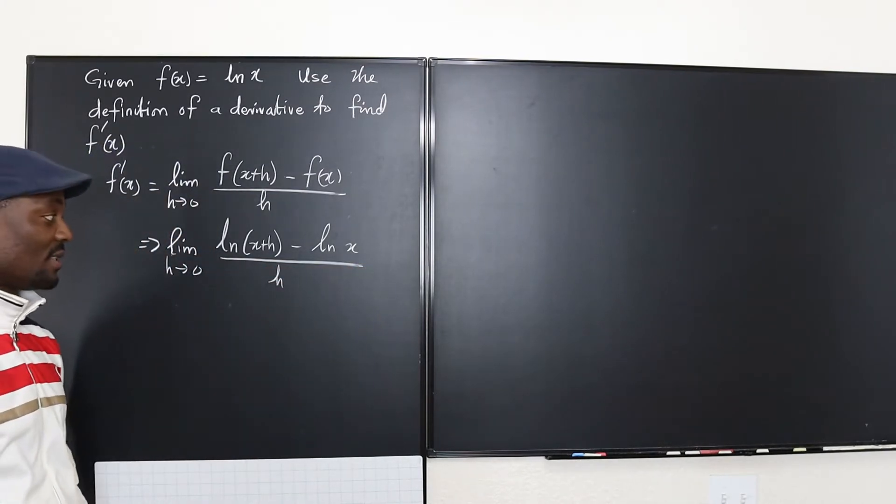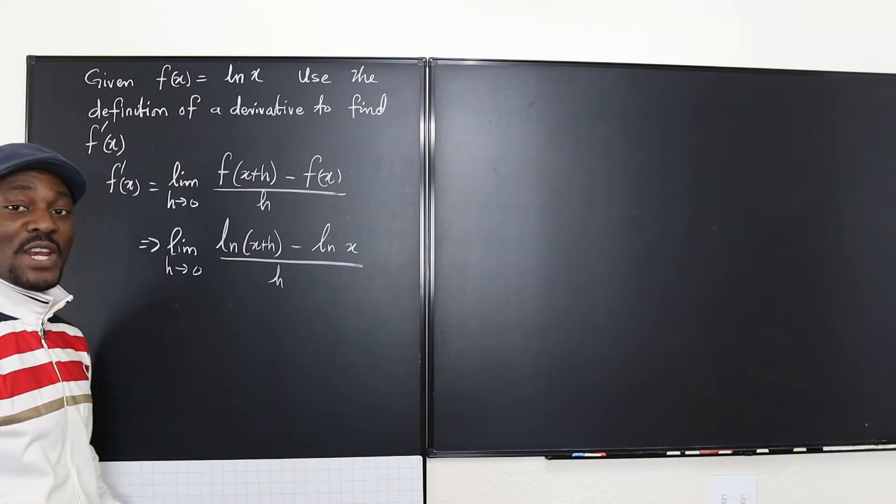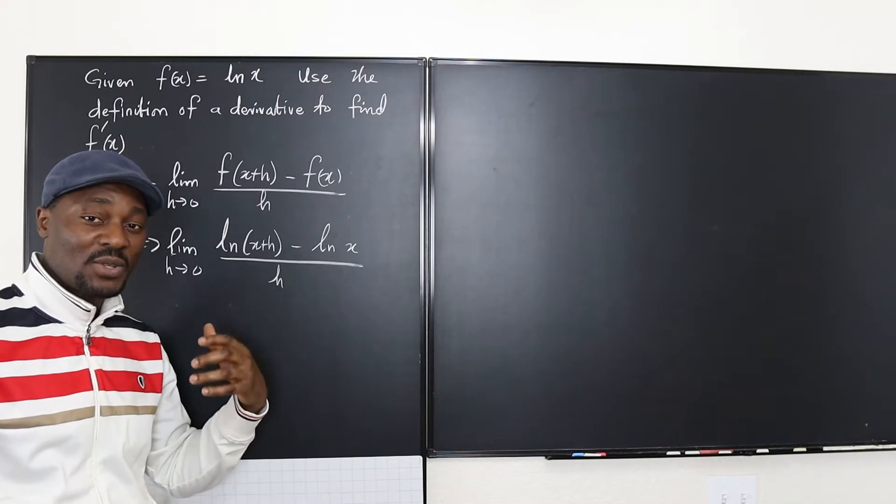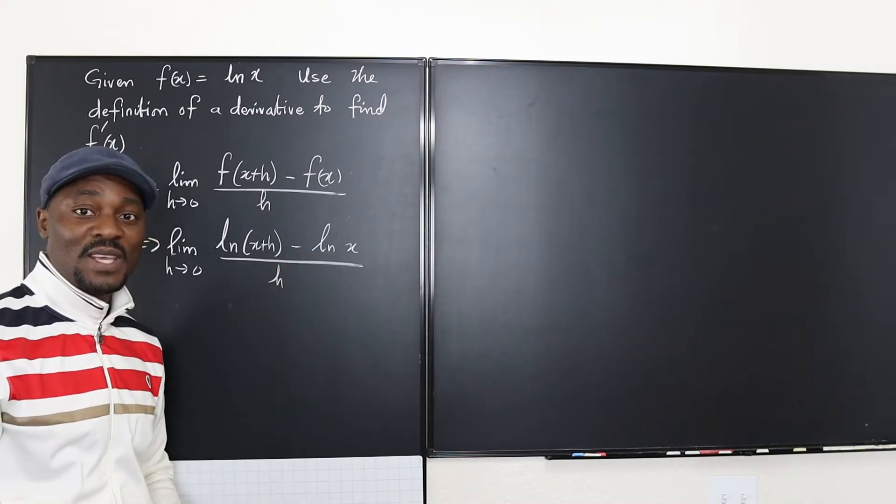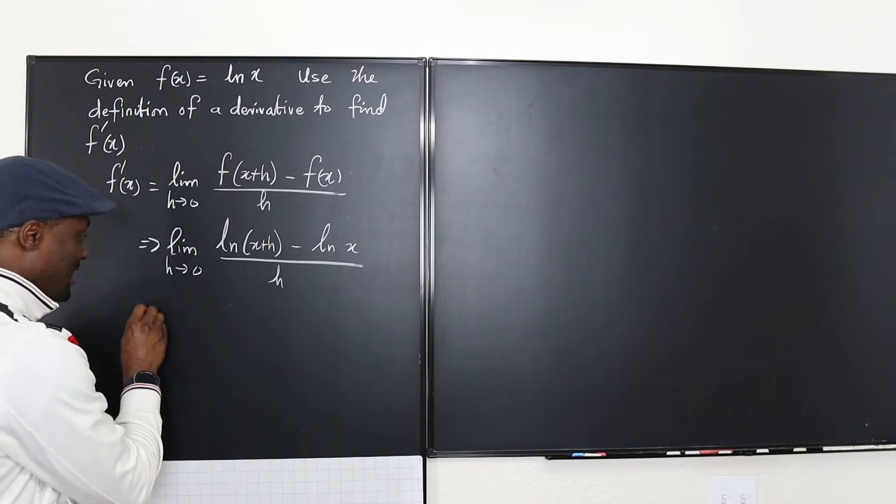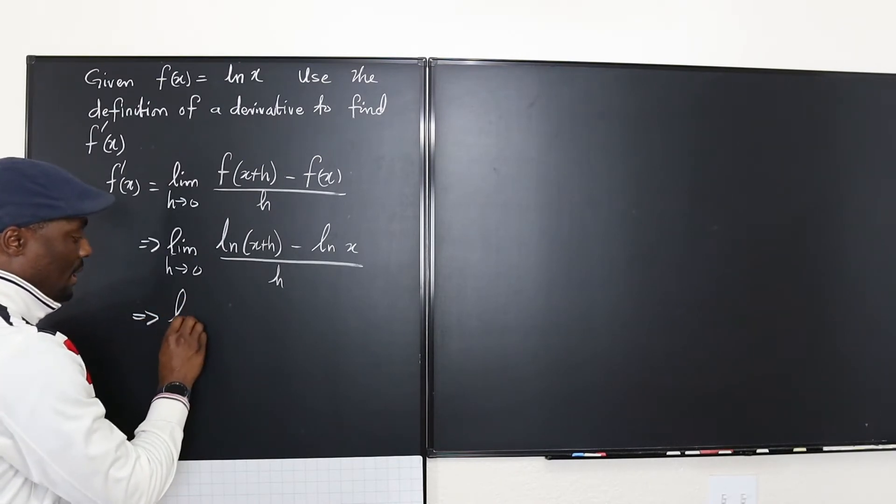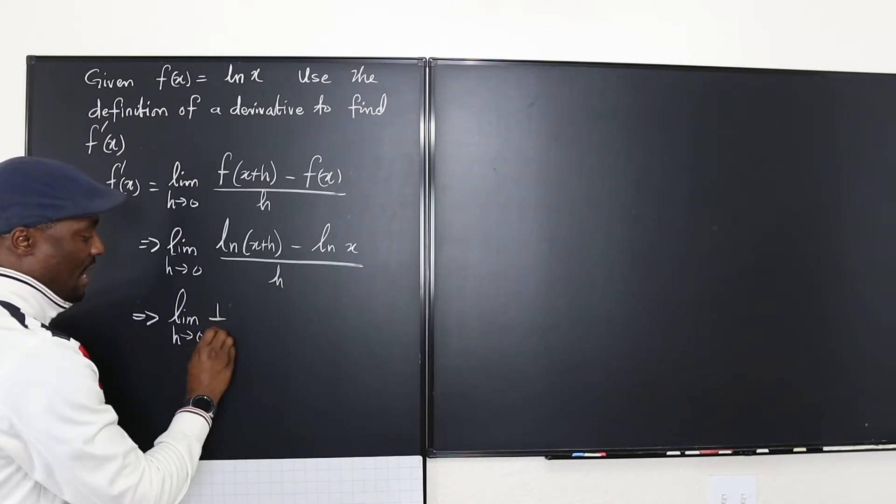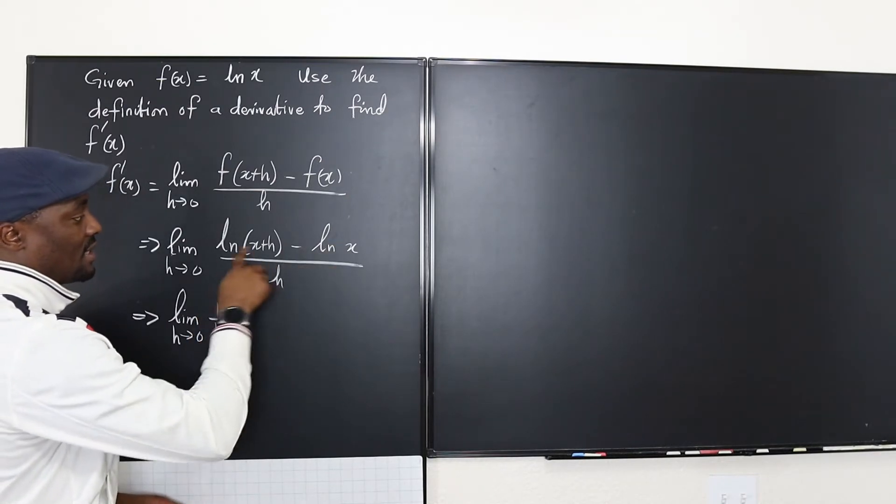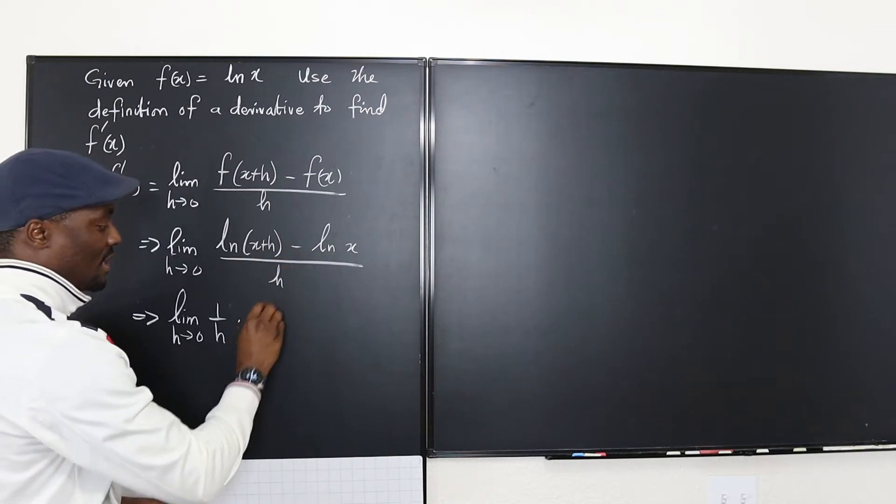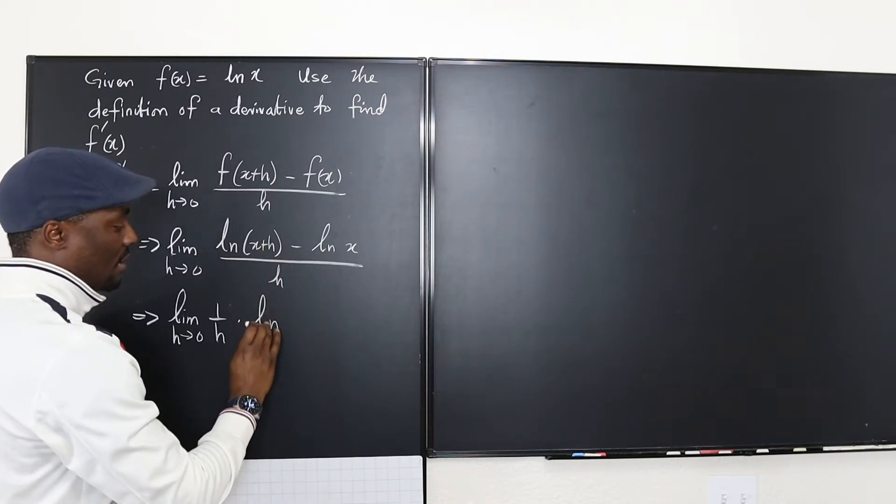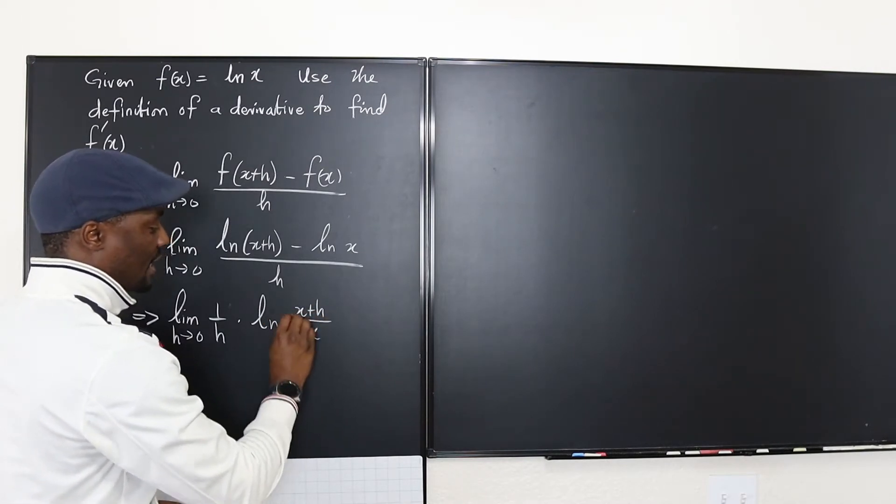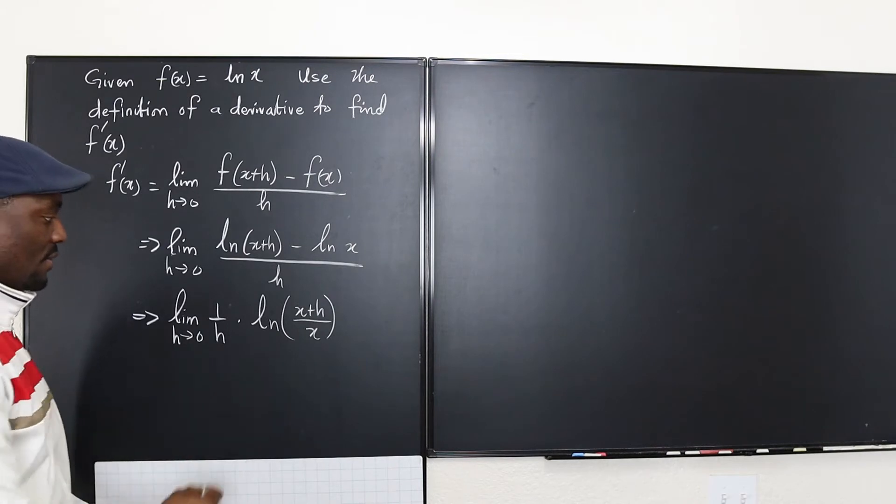What does this mean? Well we know with a logarithm when you have two terms that you're separating it means you can actually divide the arguments. So we can rewrite this as the limit as h goes to zero. I can write this as one over h multiplying this expression and this expression itself is natural log of x plus h over x. That's what I've got.